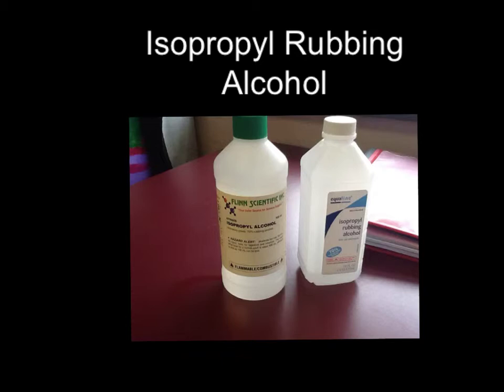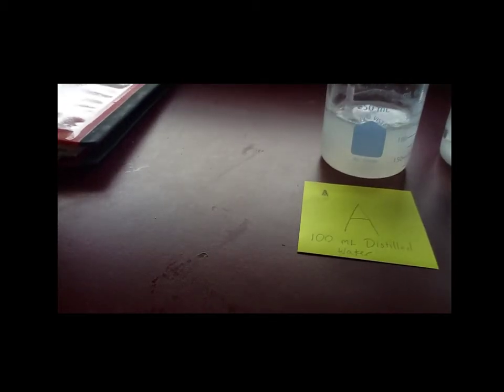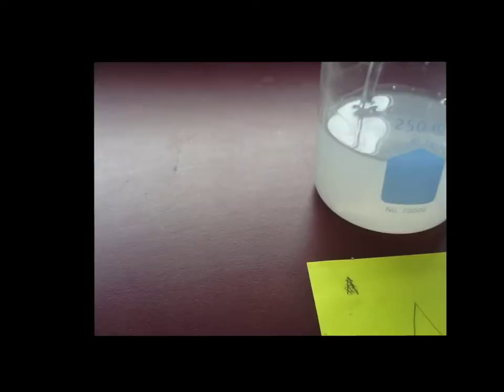Now we will begin our experiment. We put 36 grams of table salt in beaker A. As you can see on the post-it note, beaker A contains 100 milliliters of distilled water. This video demonstrates the rate at which we stirred in all three beakers. After stirring for four minutes, beaker A became slightly supersaturated. There was a very small amount of salt observable at the bottom, and the beaker was opaque.